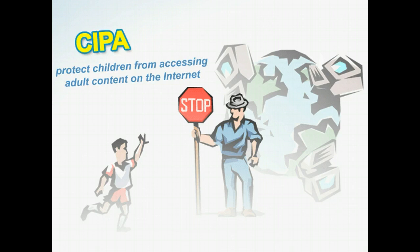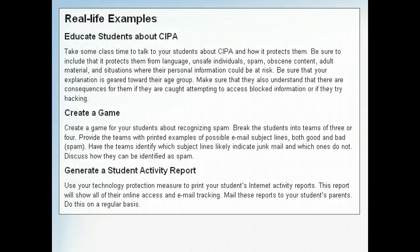The Internet is a tool that offers a world of information and communication at our fingertips. However, there is also unsafe and adult content on the Internet, and children need to be protected from it. The guidelines in CIPA help protect children from accessing such content while they use the Internet at schools and libraries. As an educator, you should be aware of CIPA guidelines and how they can be applied in your classroom. Here are some real-life examples of how the concepts discussed in this lesson could be used in a classroom, either as a teaching tool or an administrative aid.